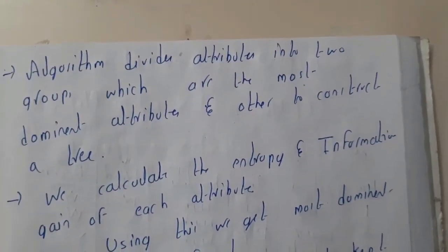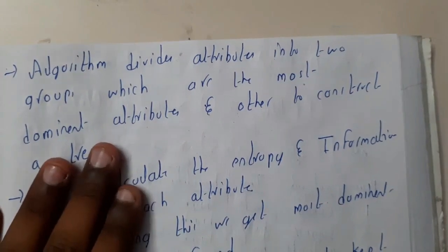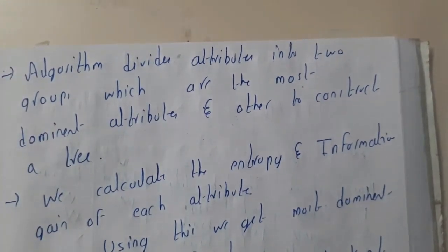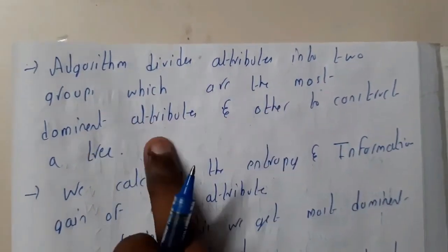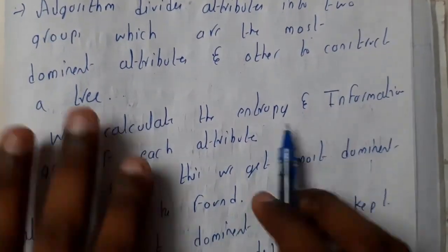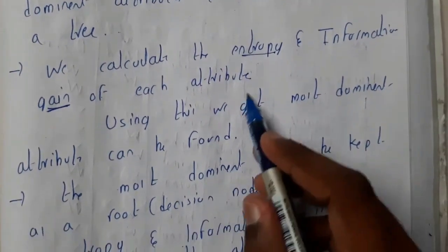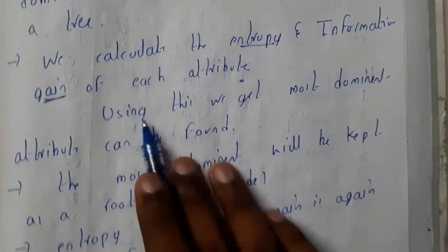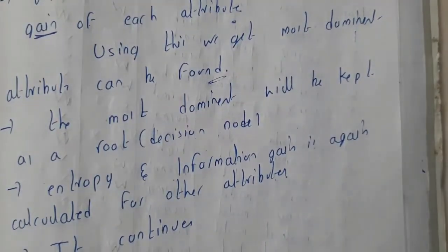Even if you are not fully confident on the theory, you can still solve problems once we go through examples. The algorithm divides data into two groups based on the most dominating attribute and others with normal constraint trees. We use two formulas — entropy and gain — calculating both for each and every attribute. From this we get the most dominating attribute, which becomes the root node of your decision tree.